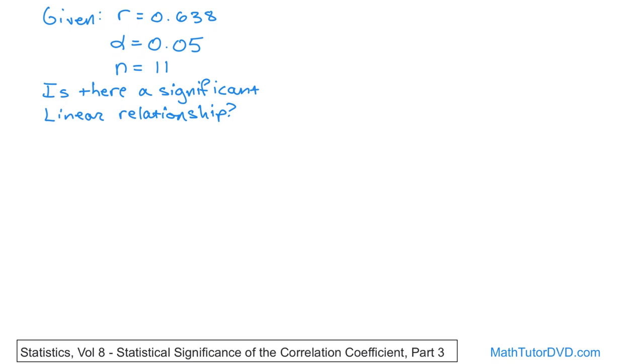And I'm going to test this at a level of significance of 0.05, same as last time, which is 95% level of confidence. And I want you to test, is there a significant linear relationship? Now, without looking at it, you can see the correlation coefficient is not really close to 0. So you're inclined to think that there is some relationship there between the variables.